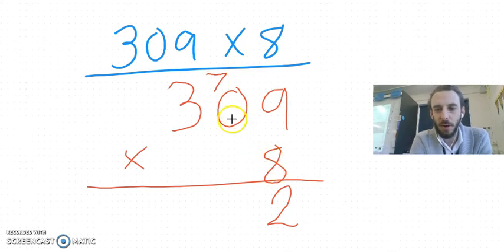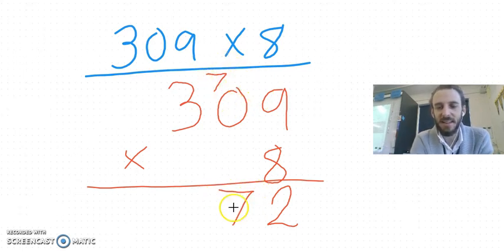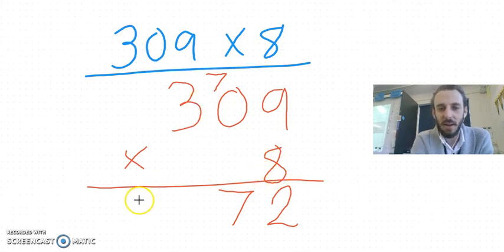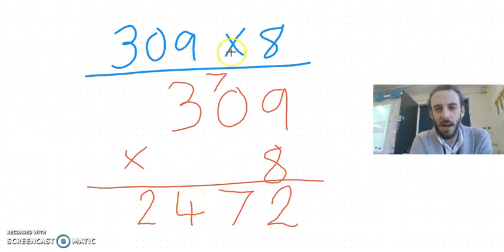Eight multiplied by zero tens is zero tens plus seven tens because it's in the tens column is seven tens. Eight multiplied by three hundreds is going to be twenty four hundreds. Three hundred and nine multiplied by eight is two thousand four hundred and seventy two.